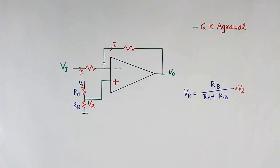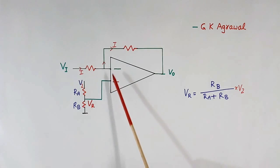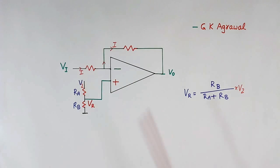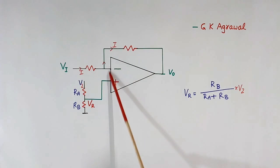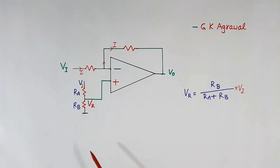How to Make Equations of Operational Amplifier Circuits. Today I will explain how to make equations of an operational amplifier circuit. First, I will tell you 2 rules. Then I will make the equation of 3 types of circuits using those 2 rules. These 2 rules are applicable for linear operation of the operational amplifier, not for a comparator circuit.